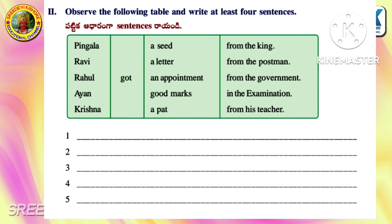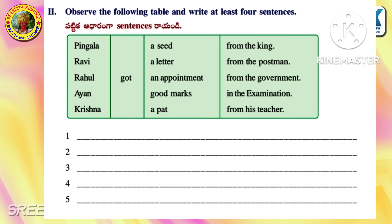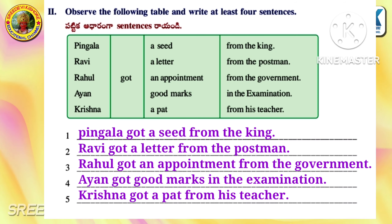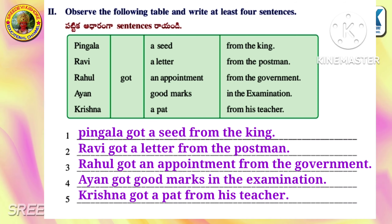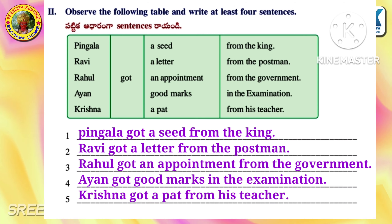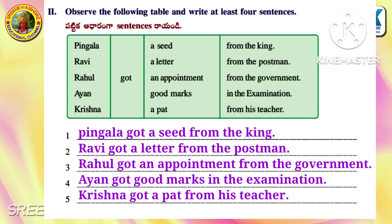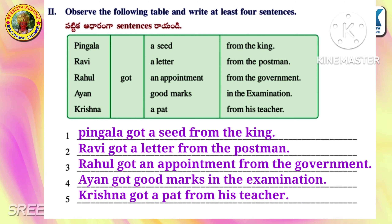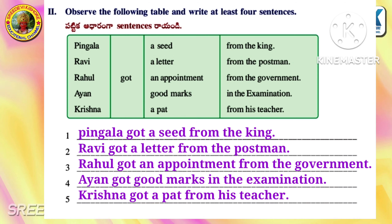Observe the following table and write at least four sentences. First: Pingalo got a seed from the king. Second: Ravi got a letter from the postman. Third: Rahul got an opportunity from the government. Fourth: Ayan got good marks in the examination. Fifth: Krishna got a letter from his teacher.